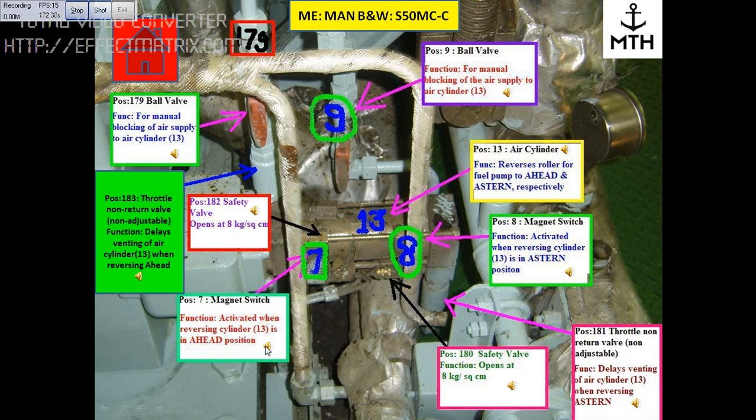This block is position number 7, which is a magnetic switch. The function of the switch is to activate the reversing cylinder number 13 in the ahead position.